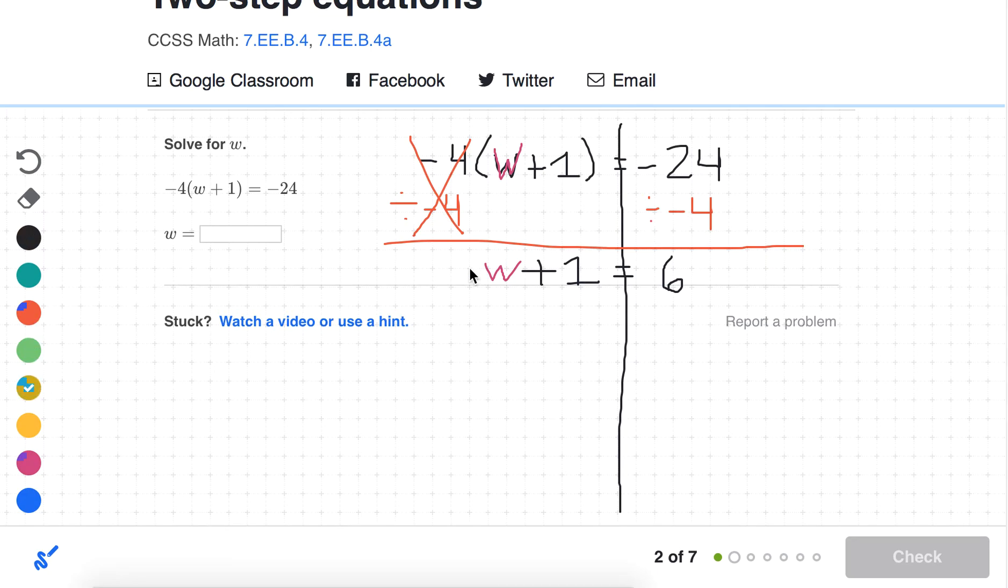Now we can peel away this innermost layer of the onion. w plus 1 equals 6. Just thinking logically, what number plus 1 equals 6? 5, because 6 minus 1 is 5, and 5 plus 1 is 6.